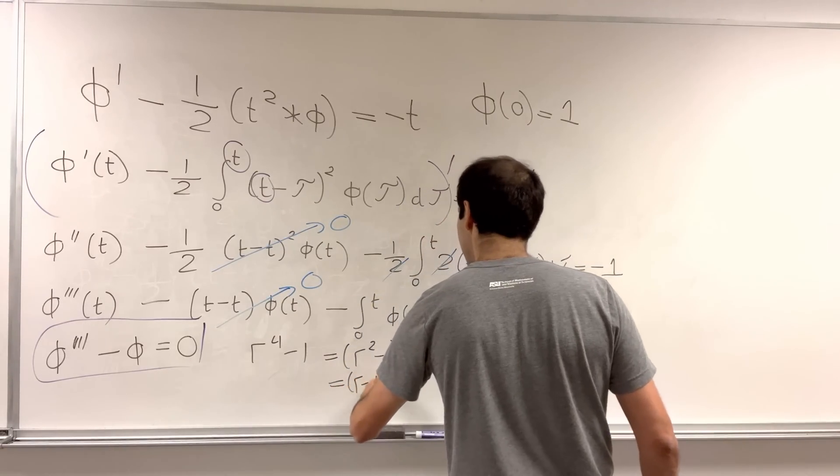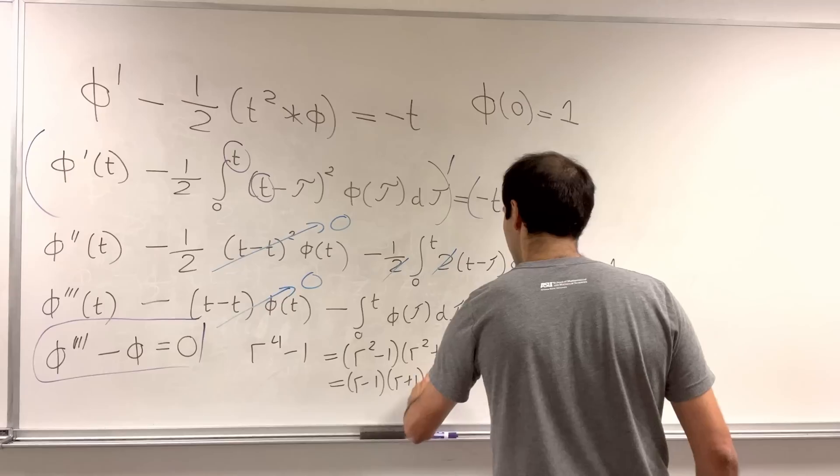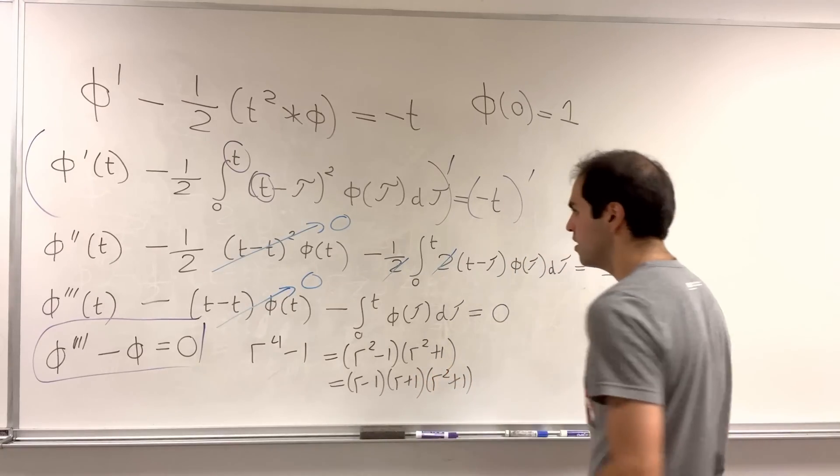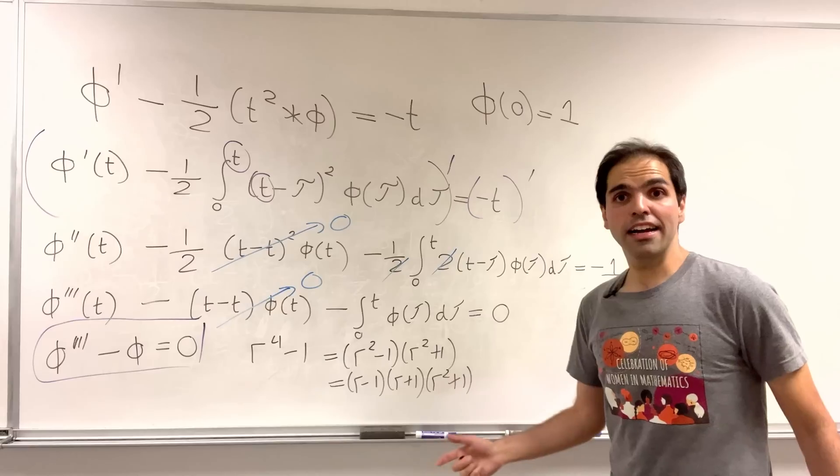And, so, it's r minus one, times r plus one, and then r squared plus one.